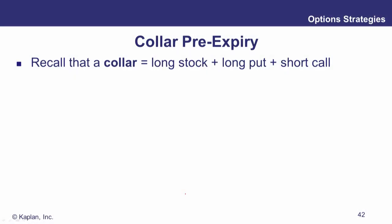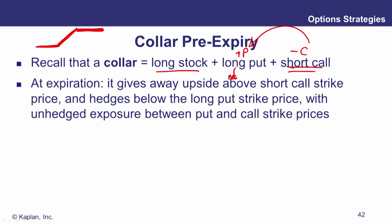A collar is long the underlying, buying protection like a protective put, and selling a call against that to generate income. Collars retain exposure between the two strikes, but below the put strike there's protection, and above the call strike you give away upside. This reduces your exposure, so it's no surprise that the collar ends up with a significantly dampened delta.